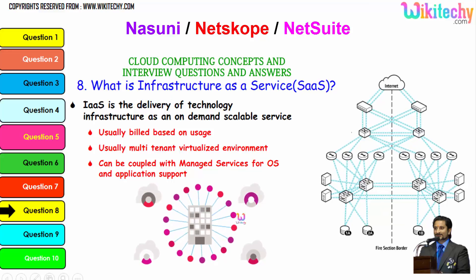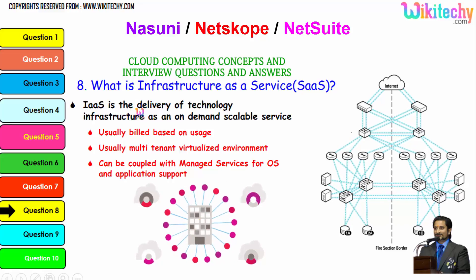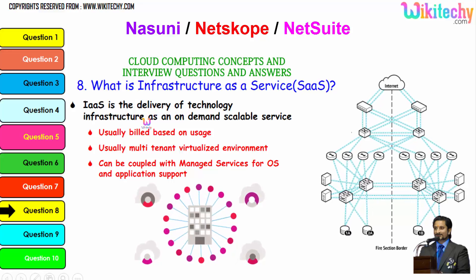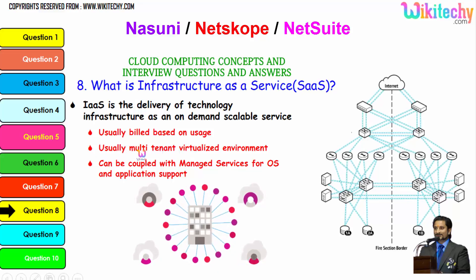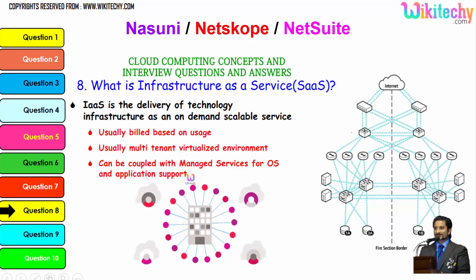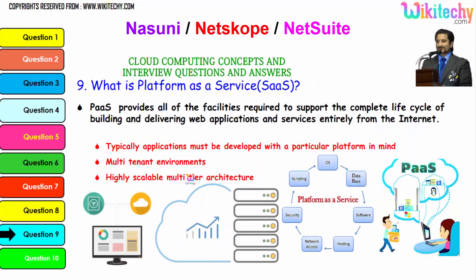Now let's talk about Infrastructure as a Service. You will be allocated a server, and you can put whatever OS and software you want. IaaS is a delivery of technology infrastructure as an on-demand, scalable service built based on usage, usually in a multi-tenant virtualized environment. It can be coupled with managed services for OS and application support.